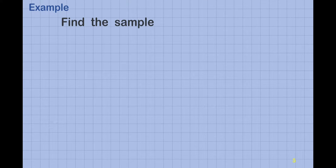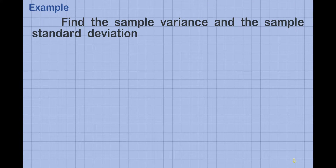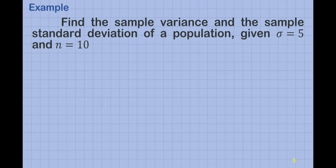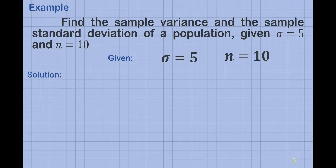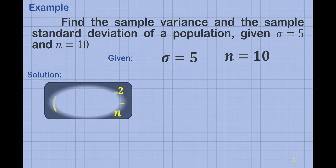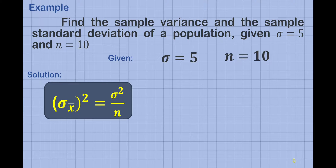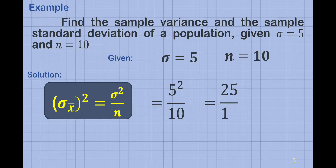For example, find the sample variance and the sample standard deviation of a population given that sigma is equal to 5 and n is equal to 10. For variance, we're going to use this formula, then substitute the value of sigma squared — which is 5 squared — then divided by the value of n, which is 10. 5 squared is equal to 25 divided by 10, which is equal to 2.5.